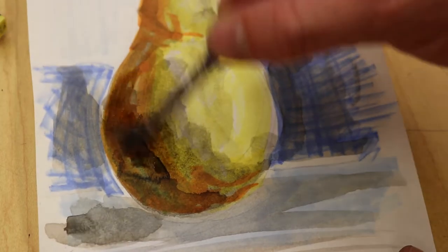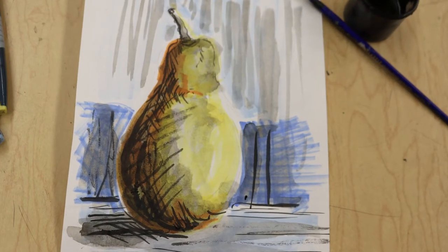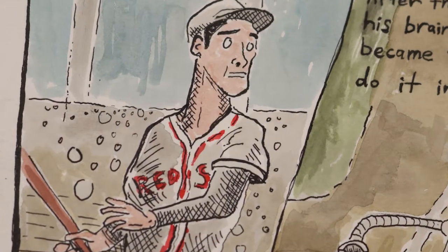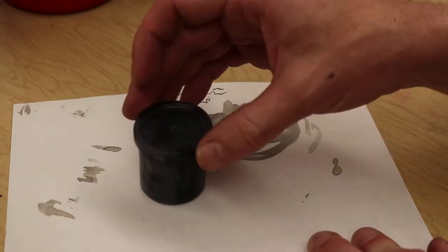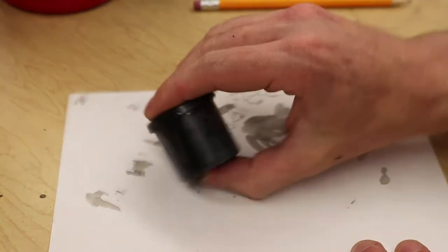Here's ink washes on top of marker, really changing the complexity of the marker color. Here it is on top of watercolor. You can also use it on top of chalk pastel. Once you're done, make sure that you close the lid tightly before placing it in the bin.